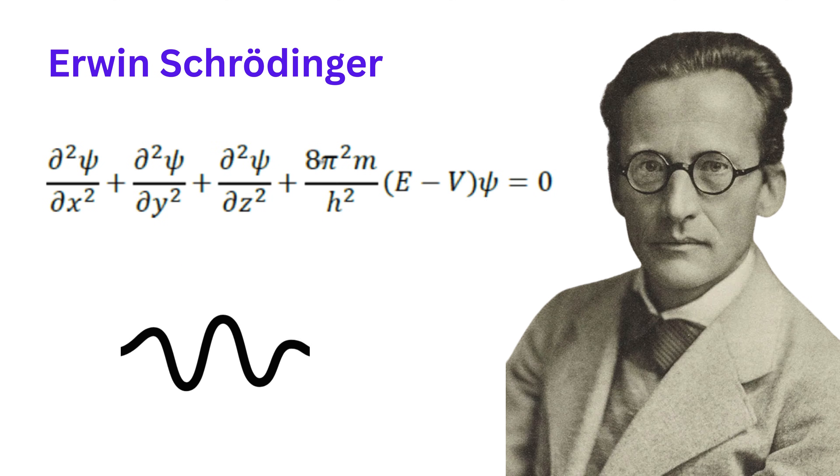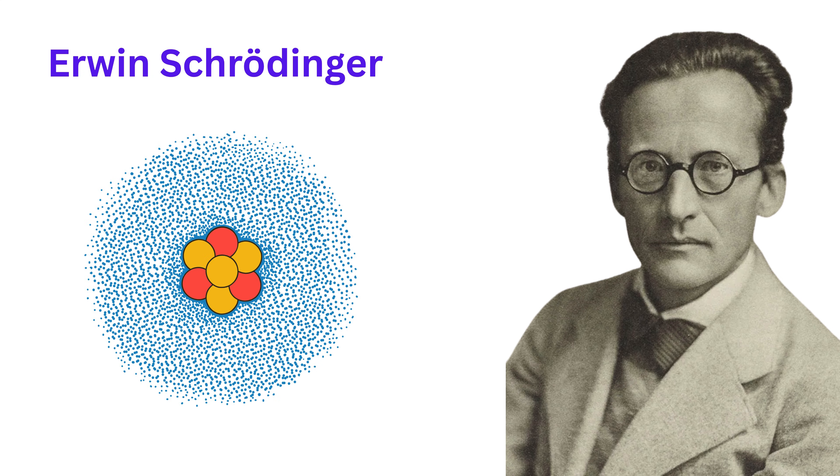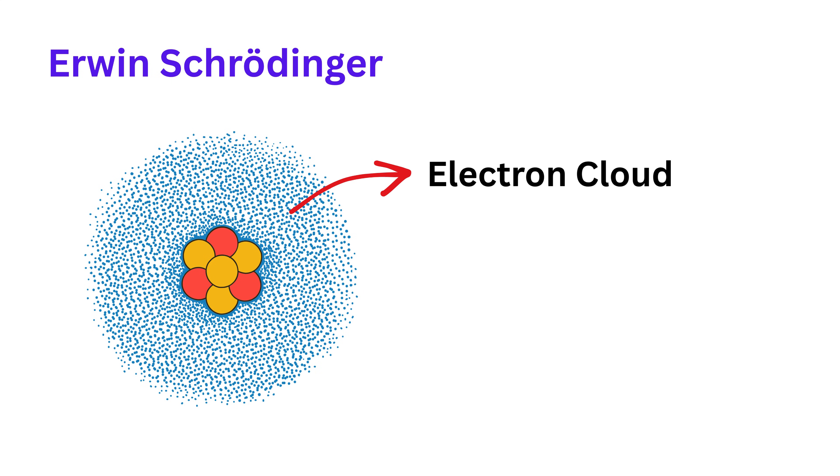He used complex mathematics to describe the behavior of electrons as wave functions. His model did not talk about exact positions, but about where an electron is most likely to be found. He introduced the idea of a probability cloud, a fuzzy region in space where the electron is most likely to be found.